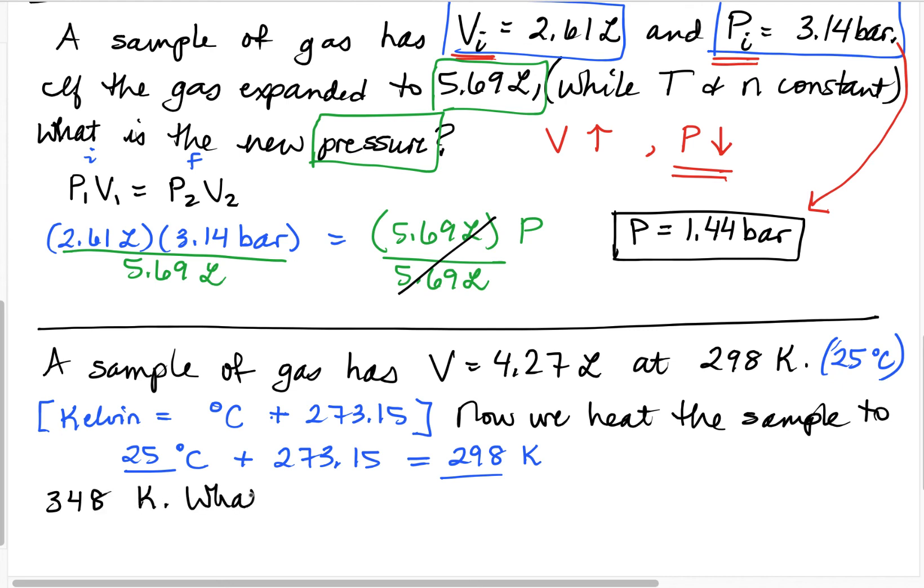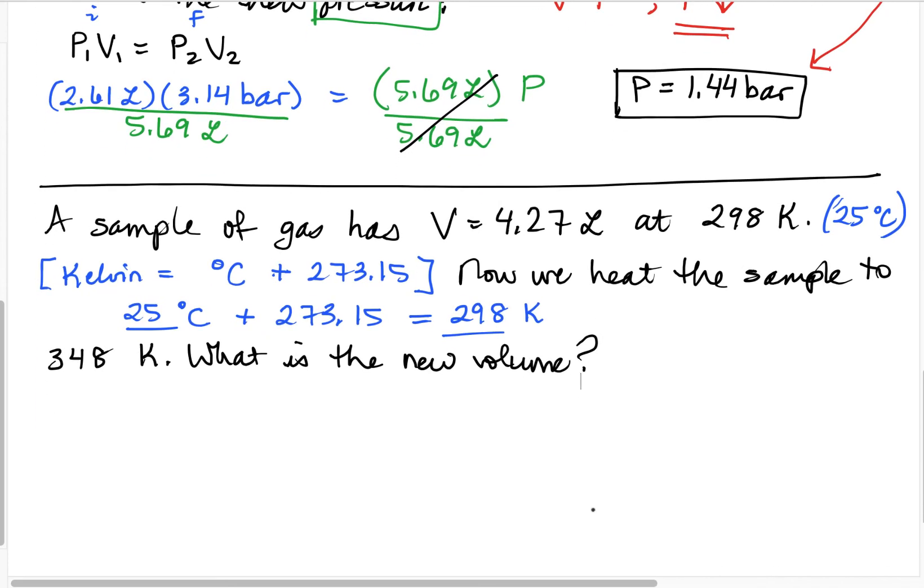So here's what we're going to do. Now, we're going to heat the sample to 348 Kelvin. And our question is, what is the new volume? This time, let's actually make our prediction before we do the calculation. So let's think about what's going on here. Here we have our sample of gas, 4.27 liters at 298 Kelvin. And now we're going to increase the temperature. So what do we expect the volume to do if we increase the temperature? We're going to expect our new volume to be bigger than 4.27 liters, because when we heat things, we do expect the volume to increase.